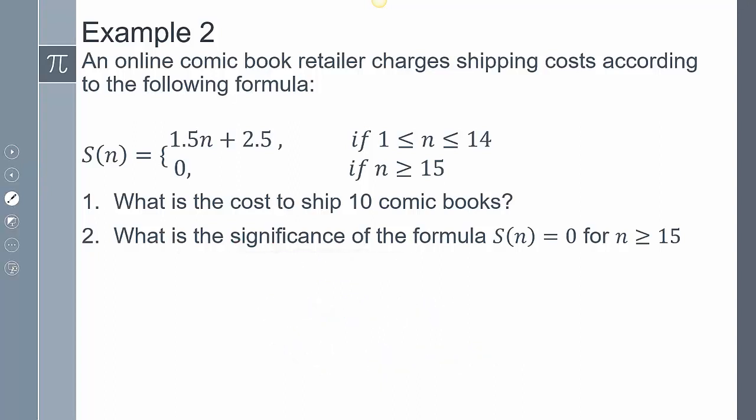Now it says what is the significance of the formula S(n) equals zero. So when this equals zero for when n is greater than or equal to 15, well, if you bought enough comic books, they're giving you free shipping. And so you're getting free shipping from that, which is awesome. But the idea here is that whenever you order greater than or equal to 15 comic books, they're going to give you that free shipping.